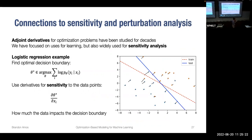A sensitivity analysis example: given the optimal decision boundary found by a linear classifier, represented by theta, the derivatives show how the optimal hyperplane changes with respect to individual data points, allowing us to visualize which data points impact the decision boundary the most.